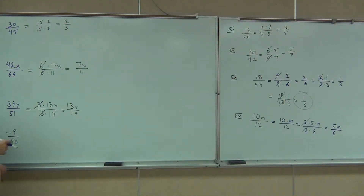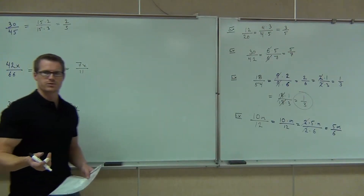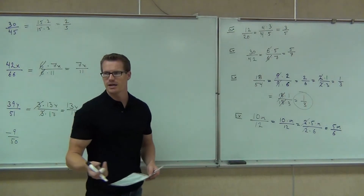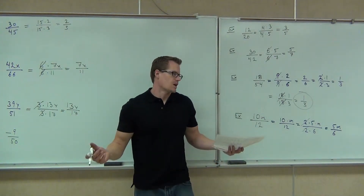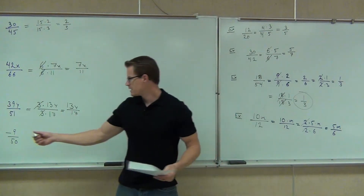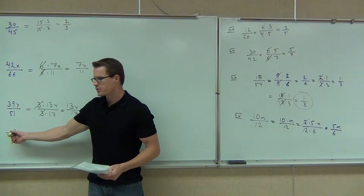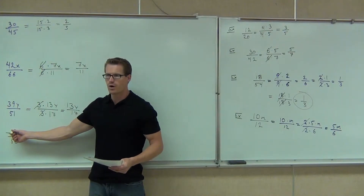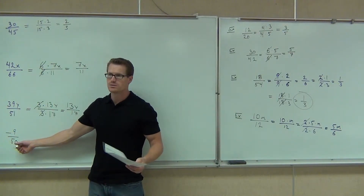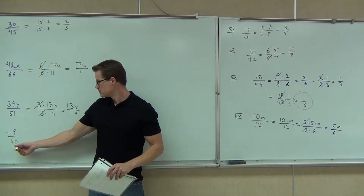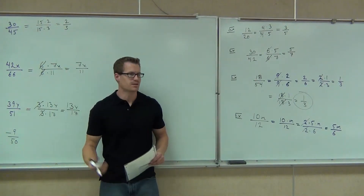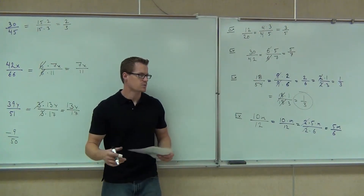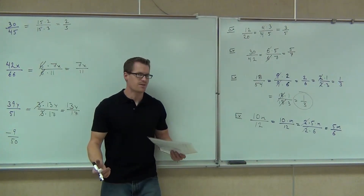Over 50. Does anything go into both negative 9 and 50? No, so you're done. The only thing that goes into here are 3, 9, and 1. Here you have 1, 2, 25, 5, and 10, but nothing that's shared. So we won't be able to simplify that.